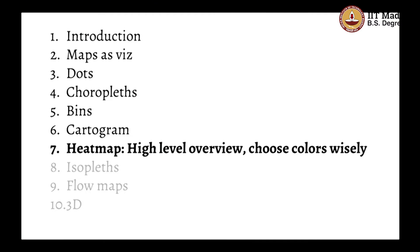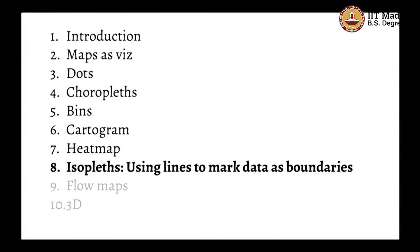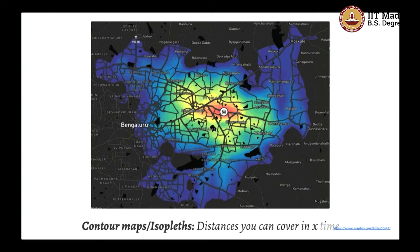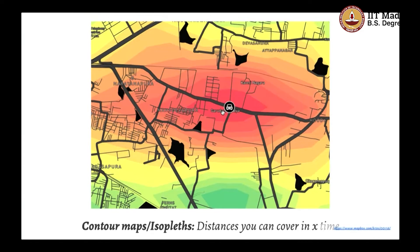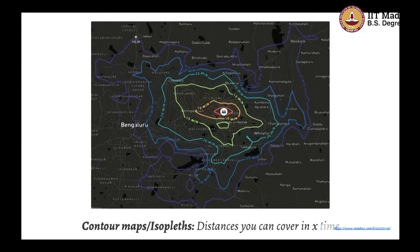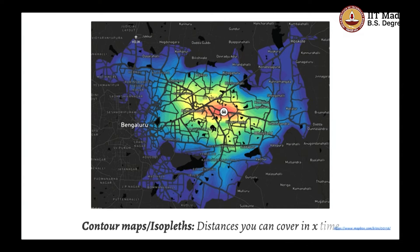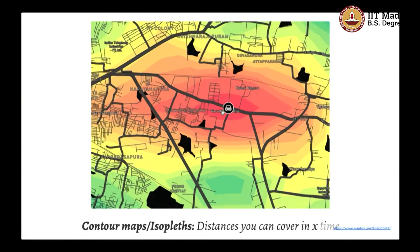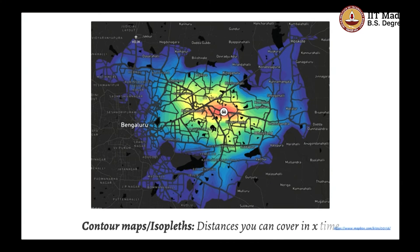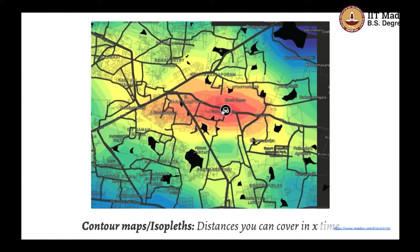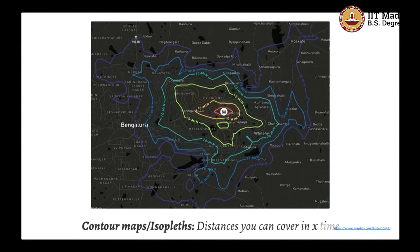The next are isopleths — fairly novel and slightly complex. They use lines or regions to mark discrete steps in data. This is a map of all the places in Bangalore and how far they are, not in terms of distance but in terms of time. This is an isochrone map showing original 10 minutes, 15 minutes, 20 minutes, 40 minutes from a given point. It does multiple queries using a navigation API and makes these discrete boundaries. You would see a lot of this for atmospheric data like pressure, rainfall, temperature, or contour maps of mountains with elevation.